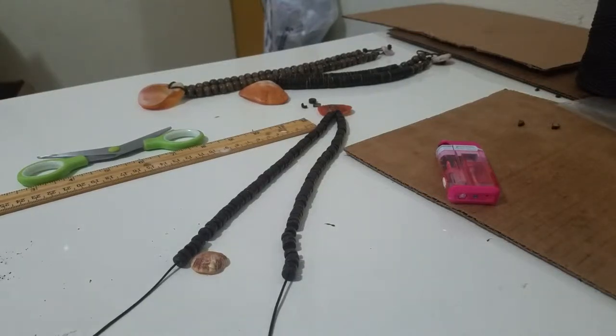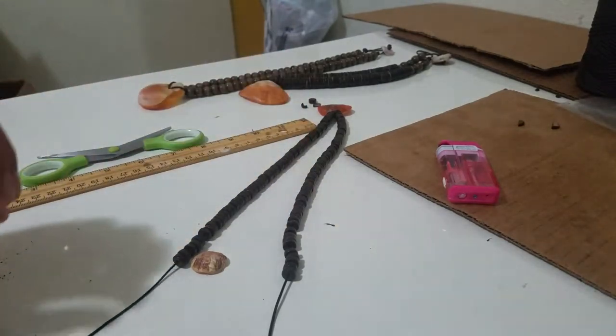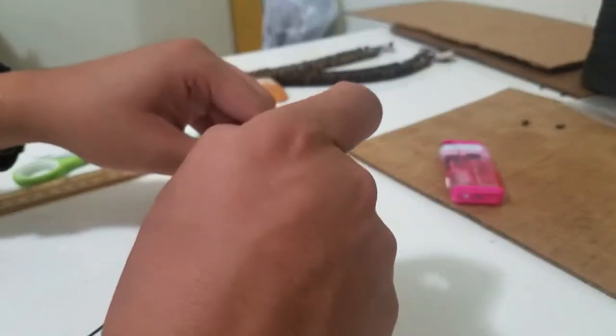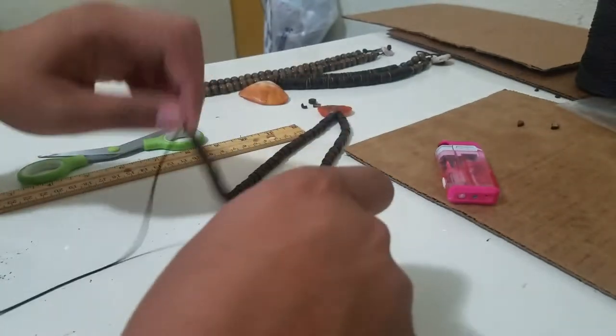Okay, so now I've done 62 beads on each side. So I'm gonna tie a knot on each end, or double knot, to lock the beads in place. Double knot, double knot.